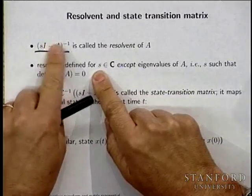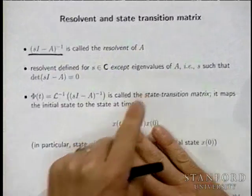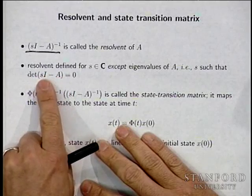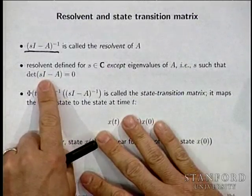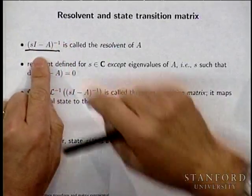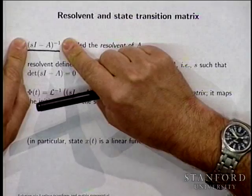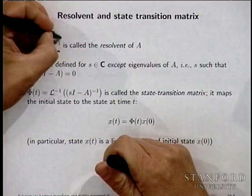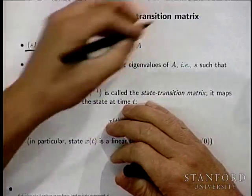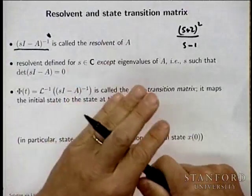There are only N eigenvalues or fewer, and we'll talk about that later. When you write SI minus A inverse — the resolvent of A — you should understand there are up to N complex numbers for which this is not invertible and you shouldn't write the inverse. It's just like writing (S+2) squared over (S-1): you don't write a footnote every time saying it's defined for all S except S equals 1. As long as you remember that footnote is in place, everything is okay. The same is true for the resolvent.